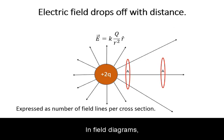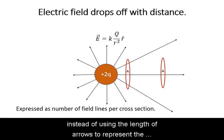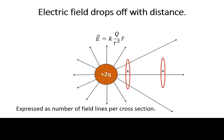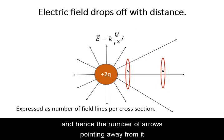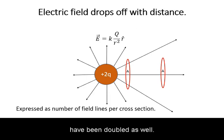In field diagrams, instead of using the length of arrows to represent the strength of the field, we use the number of arrows. In this example, we have doubled the charge, and hence the number of arrows pointing away from it have been doubled as well.